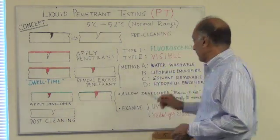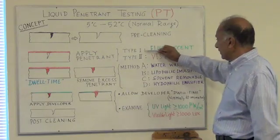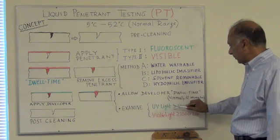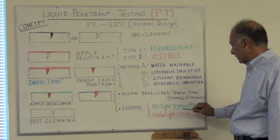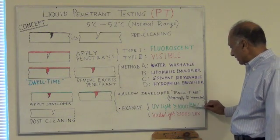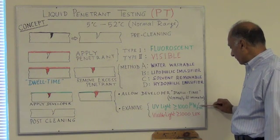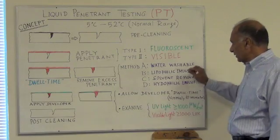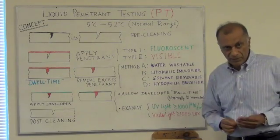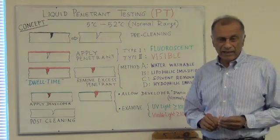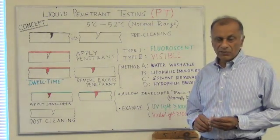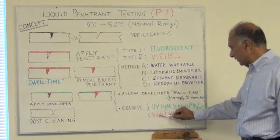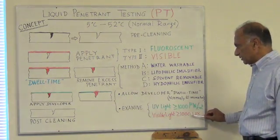If we are using a Type 1 penetrant, which is fluorescent, the examination is done underneath a black light with a minimum light intensity of 1000 microwatts per centimeter squared. If we are using a Type 2, which is a visible penetrant, we have to examine under visible light with a minimum light intensity of 1000 lux.